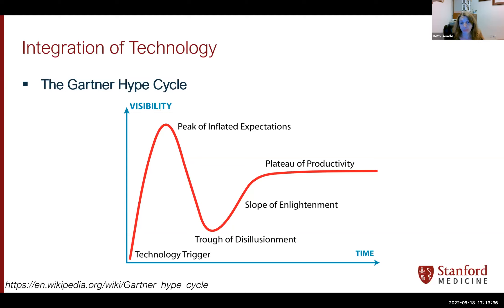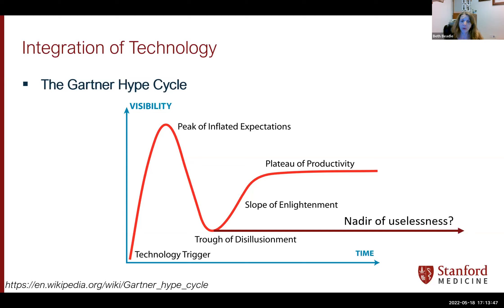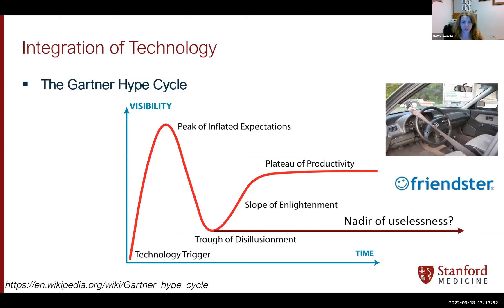Then people realize it's too good to be true, and things fall down to what they call the trough of disillusionment — 'this is never going to work.' But over time, you can take those big dreams, get over your disappointments, and get back to a place where they're just practically useful in certain scenarios. It's called the slope of enlightenment and then the plateau of productivity. Our goal is to make something from a technology perspective that will ultimately help our patients and staff.